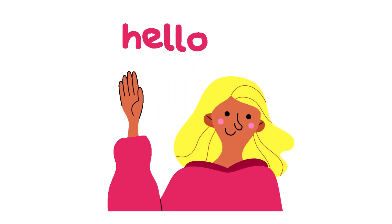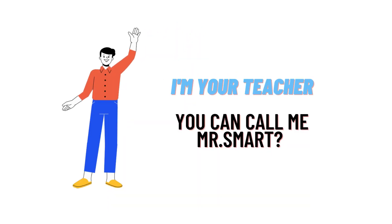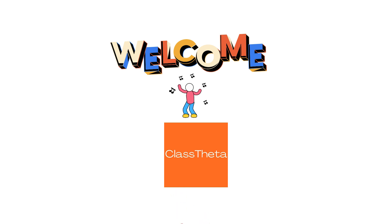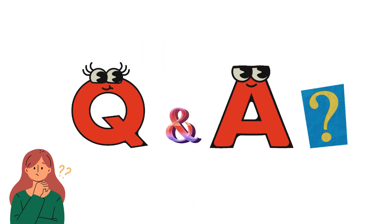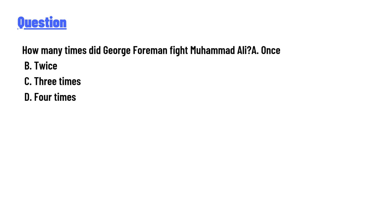Hello everyone, how are you? I am Akrash, your teacher here, and I will teach you different questions and their answers. So I welcome you on Class Theater. Our today's question is: How many times did George Foreman fight Muhammad Ali? A. Once, B. Twice, C. Three times, D. Four times.